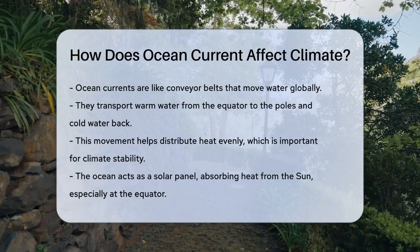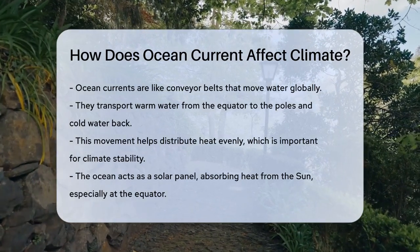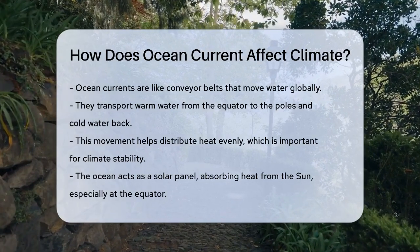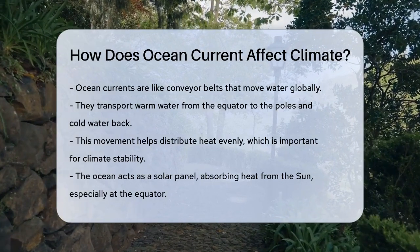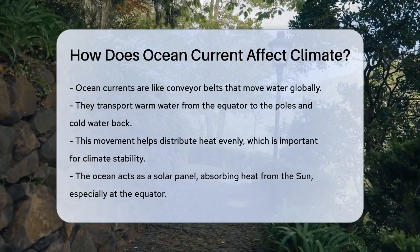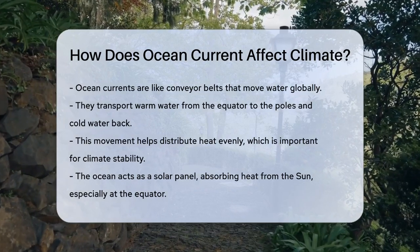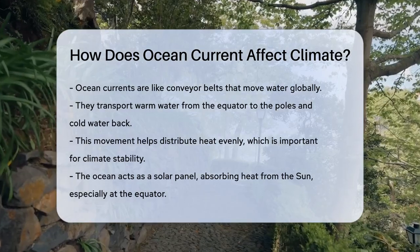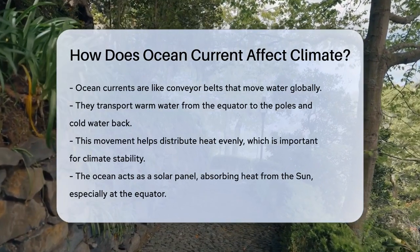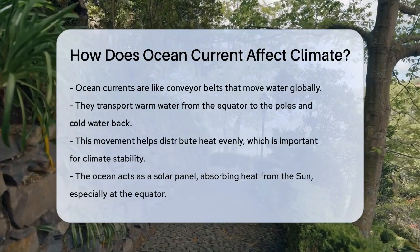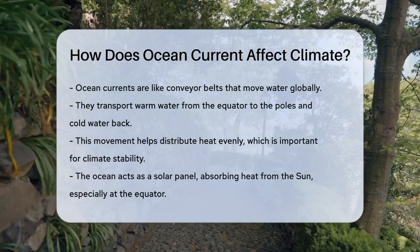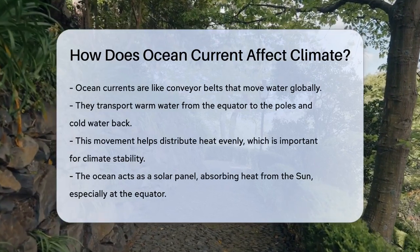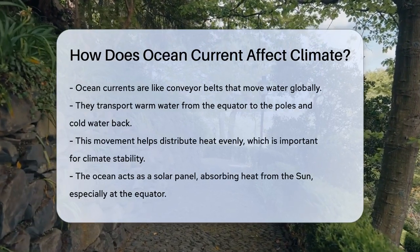Ocean currents are like massive conveyor belts that move water around the globe. They transport warm water from the equator towards the poles and cold water from the poles back to the equator. This process helps distribute heat evenly across the Earth, which is crucial for maintaining a stable climate.